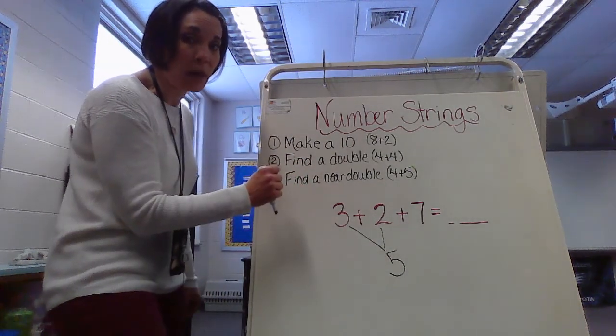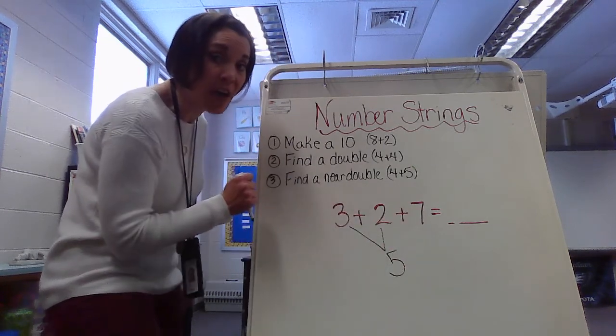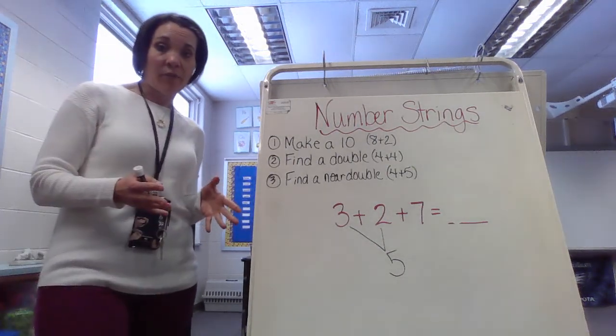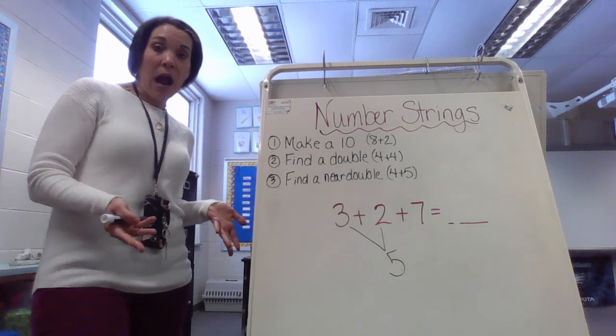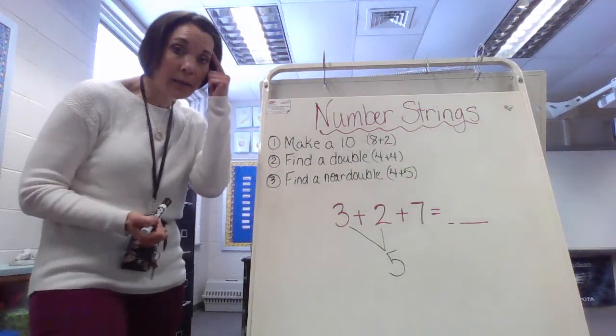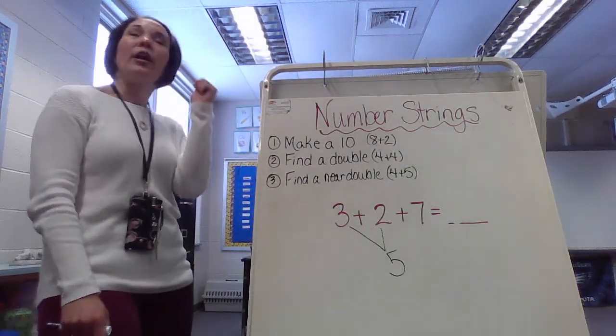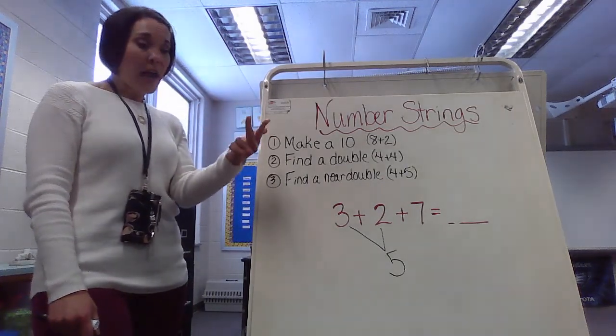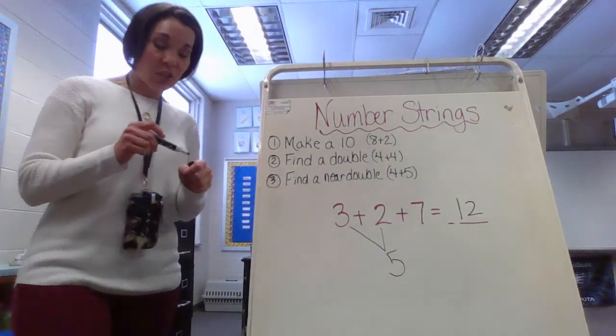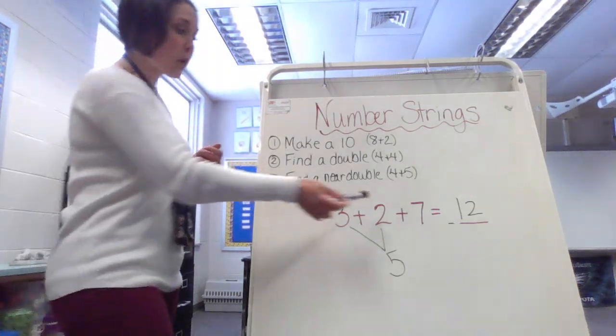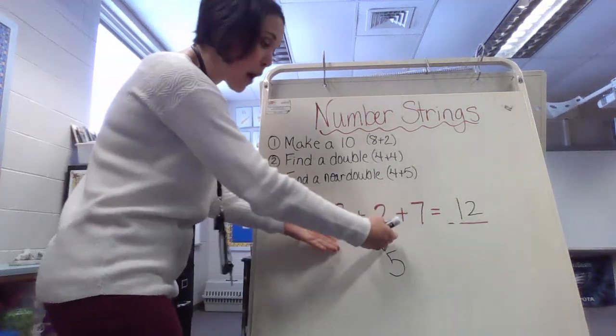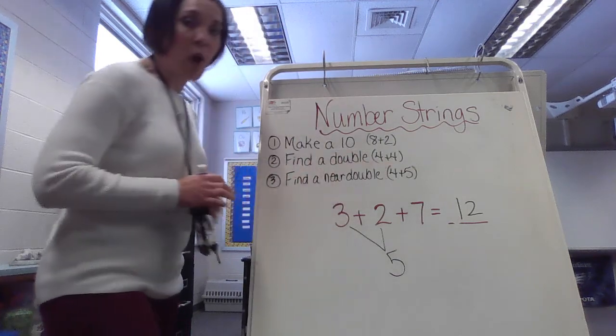So now I want to take this 5 and add it to my 7. Maybe you might not know that combination right off the bat, so use another strategy in order to figure it out. Usually what I like to do is a count on method. I'm going to take that 7, put it in my head, and then count on 5 more. So I'm going to go 7, 8, 9, 10, 11, 12. So notice how that answer still remains the same. 3 plus 2 plus 7 equals 12. Last time we did it with making a 10 combination, now we did it with a near double combination. You still get 12 as your answer.